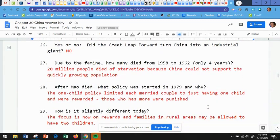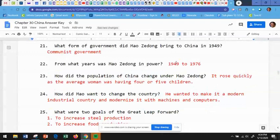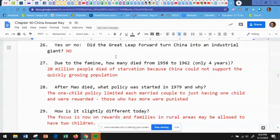And at 27, due to the famine, how many died from 1958 to 1962? So this is only four years. 20 million people died of starvation because China could not support the quickly growing population. So again, this is under Mao Zedong because he was in charge from 49 to 76. And there was a famine again that came and this time it killed 20 million people.